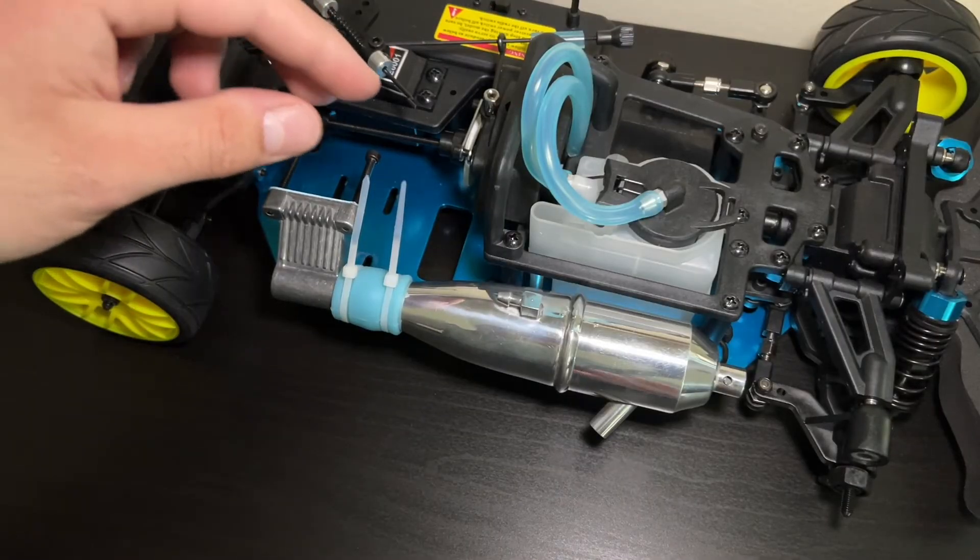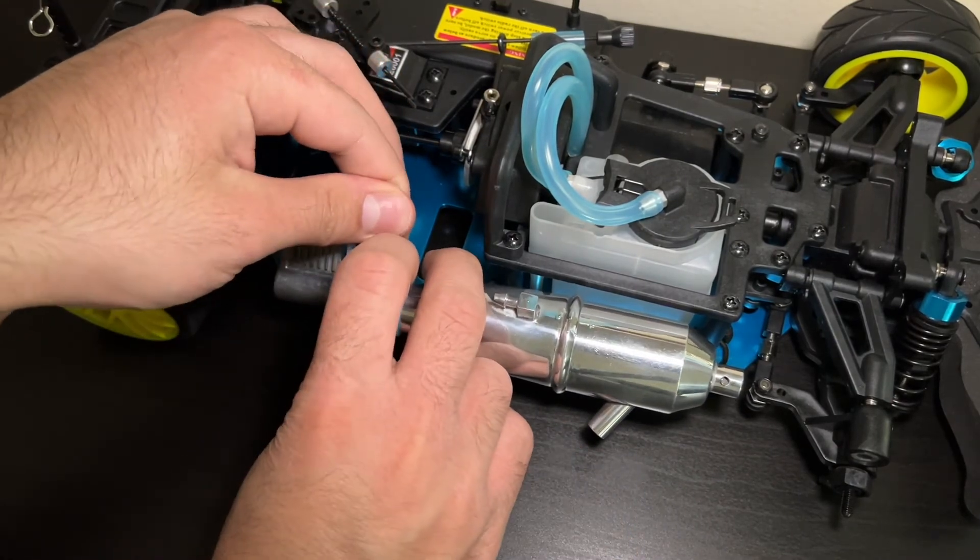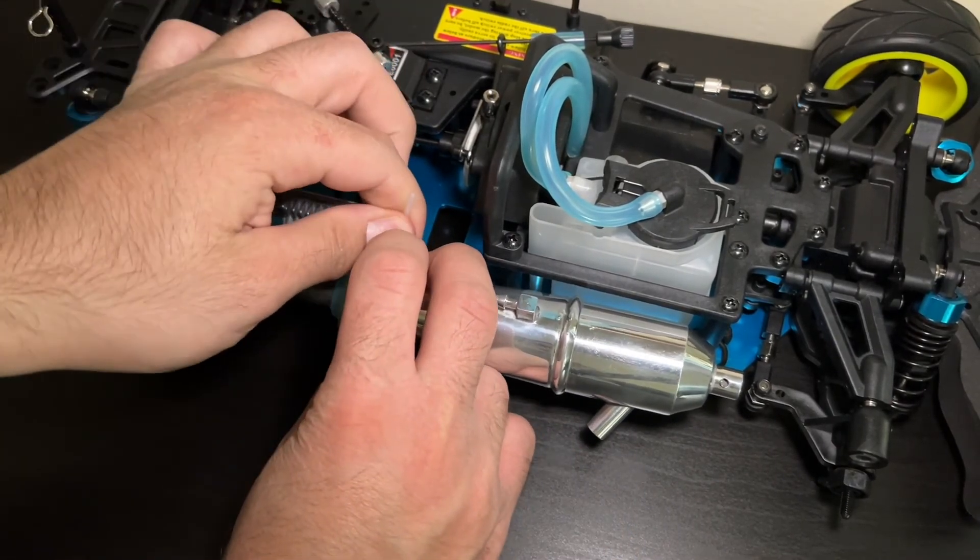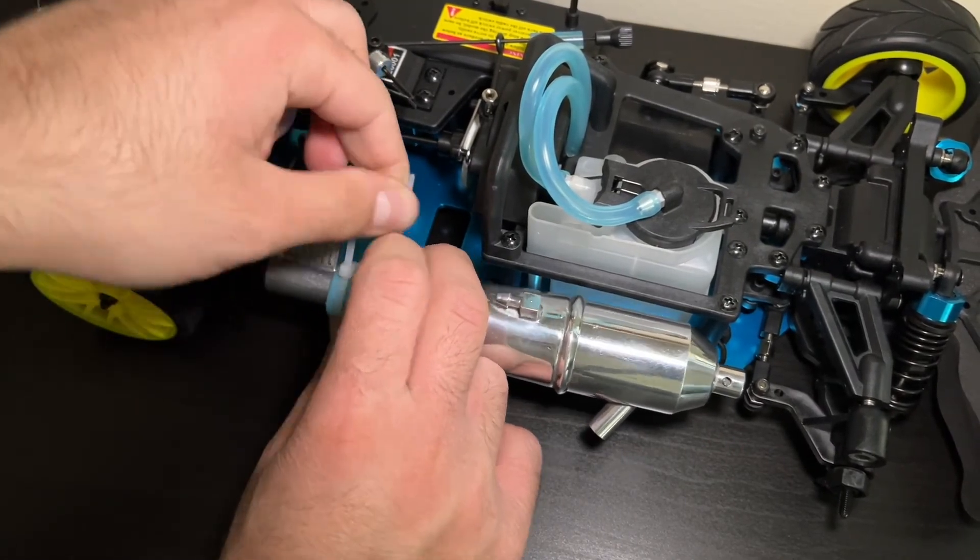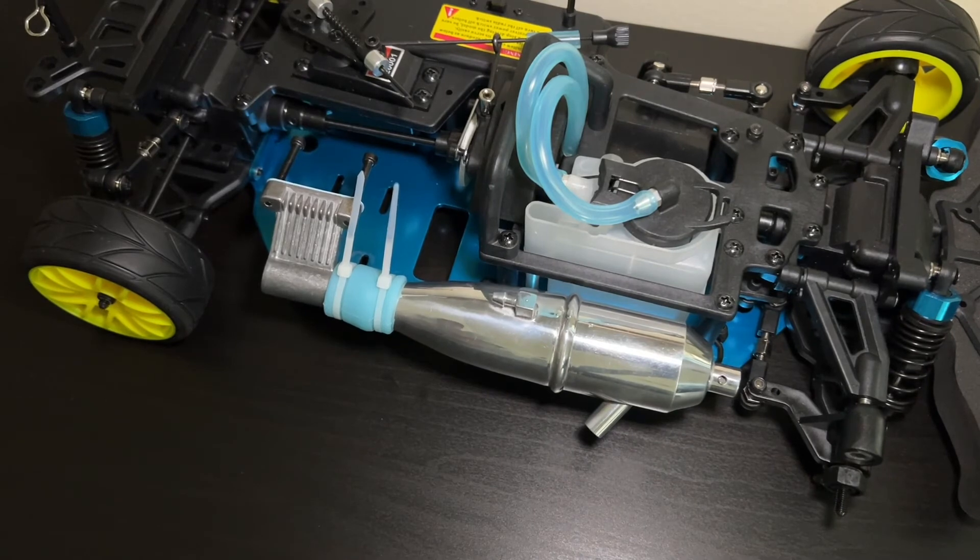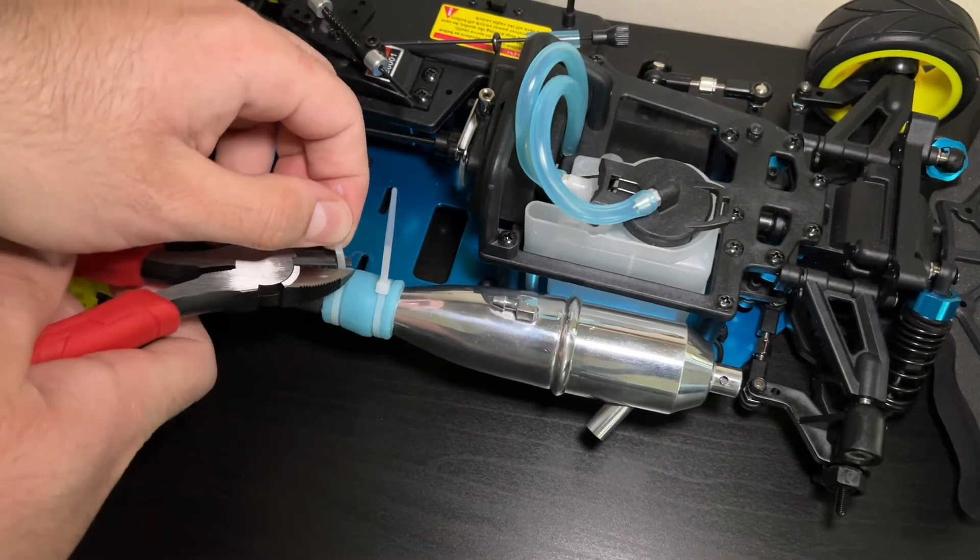Now that everything is in my desired place I can go ahead and tighten these zip ties as much as I can. And now I can use my cutters to cut off any excess.